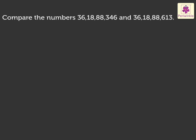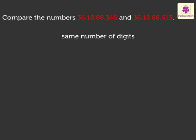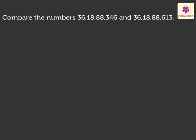Compare the numbers 36,18,88,346 and 36,18,88,613. Since the number of digits in both these numbers are same, we follow a two-step procedure to find the answer.